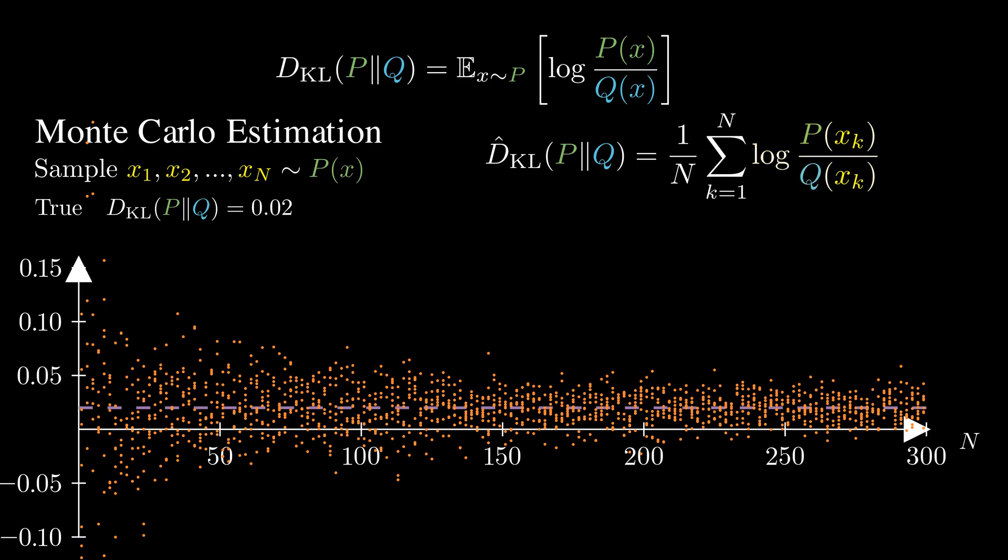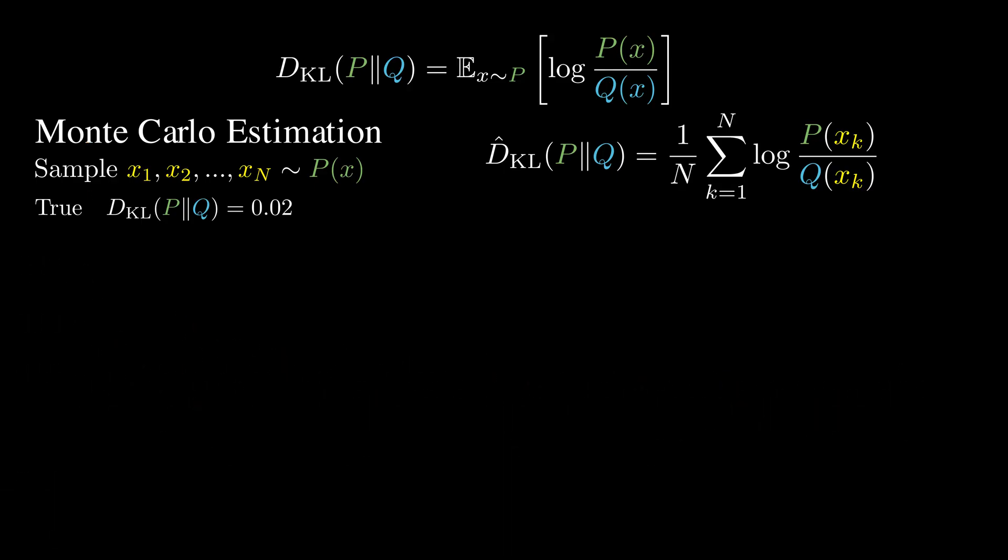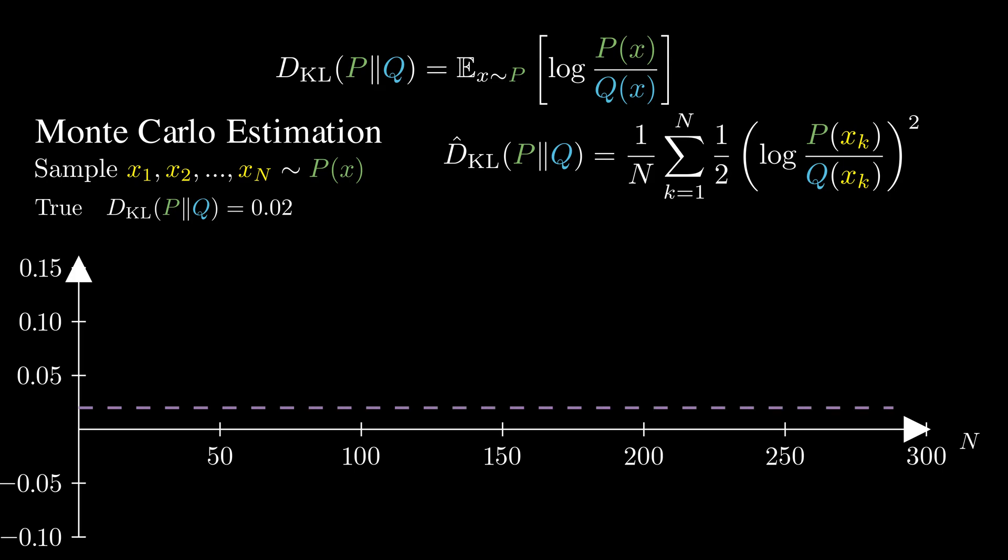The problem lies in the log ratio term. Log P over Q is negative whenever Q(x) is larger than P(x). Let's try a variance reduction trick. We square the log ratio term to ensure the estimator is always non-negative. And it works. This square estimator gives us a much lower variance and reasonably accurate values, at least when P and Q are close.